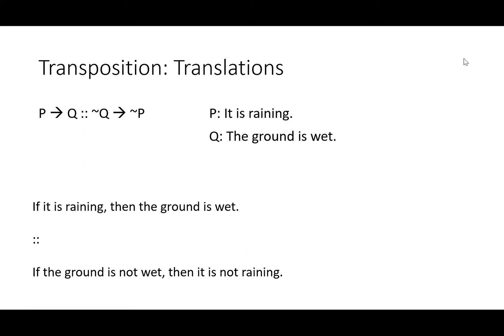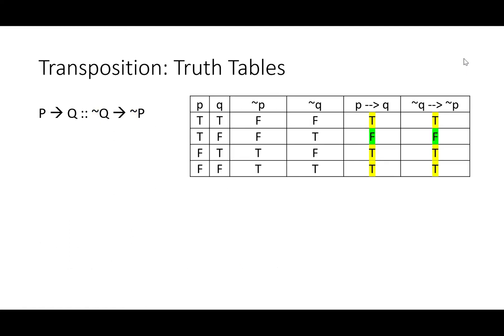I'm going to use my same example from modus tollens and modus ponens and say if it is raining, then the ground is wet, is logically equivalent to if the ground is not wet, then it is not raining. Notice how the negations follow in both the English and the logic. Of course, they have the same truth table as well. Recall that a conditional is only false when a true antecedent leads to a false consequent. And in line two, that's the case. P is true but Q is false, so a true P leads to a false Q, but not Q is also true. And a true not Q leads to a false not P. These are just different ways of saying the same thing.